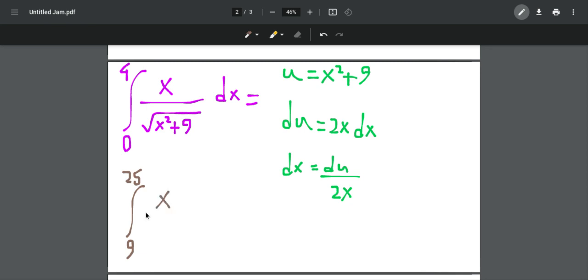We get x over—and this whole thing is just square root of u—and then we multiply it by dx, which is du over 2x.